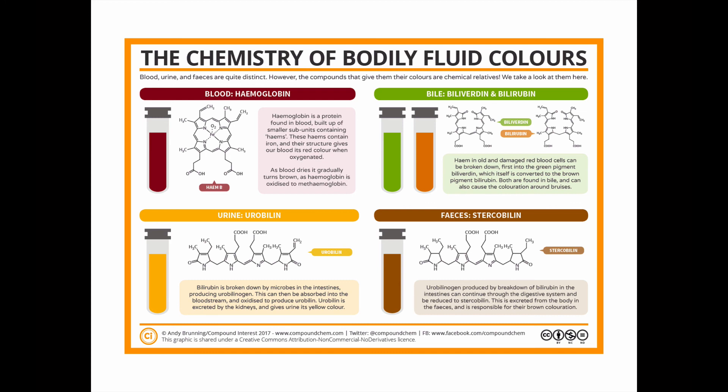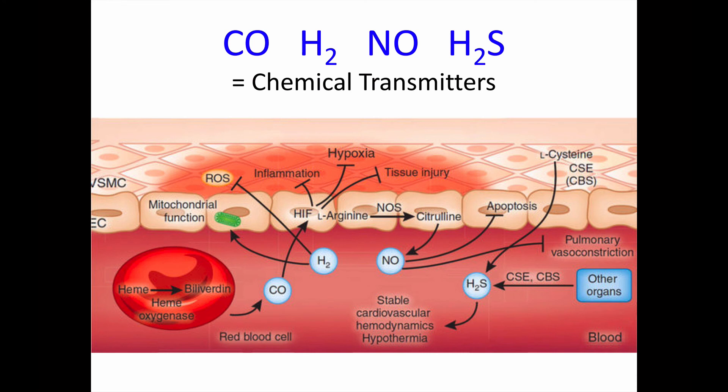Here's a figure from compoundchem.com on the chemistry of body fluid colors that you can look over more closely on your own if you're interested. Carbon monoxide is among many small simple gases found in trace amounts in our body that are used as chemical transmitters. We also see hydrogen gas, hydrogen sulfide gas, and nitric oxide gas. Clinically and pharmacologically, nitric oxide is by far the most important of these gases — it helps regulate smooth muscle tone in the vasculature, and you're going to hear a lot more about this in the pharmacology course.